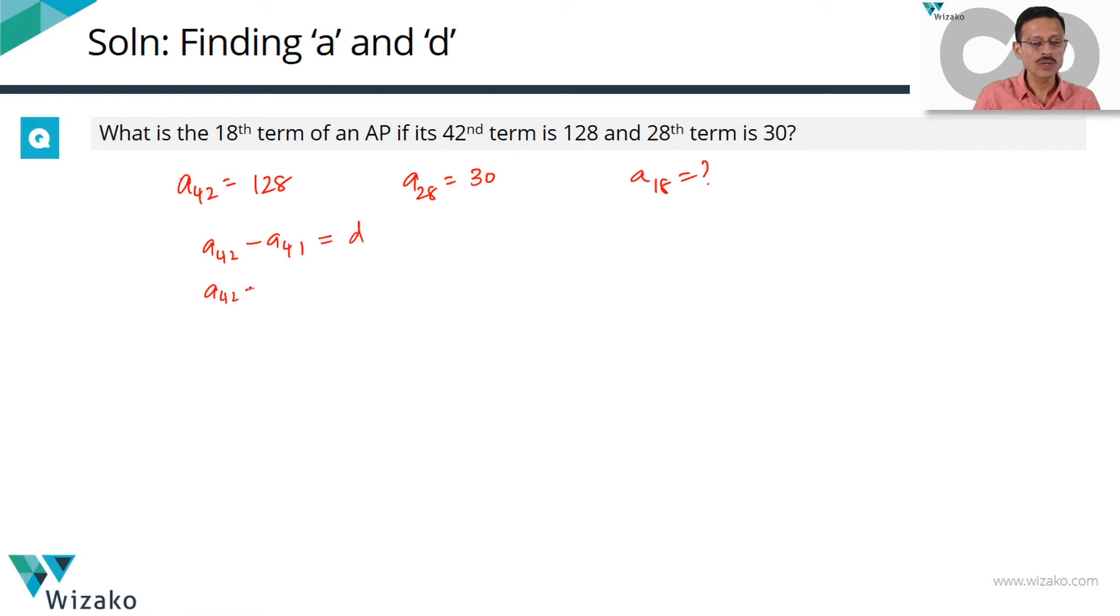Between A42 and A40, how many common differences are likely to be there? A42 to A41 is one common difference. A41 to A40 is another common difference, so we're going to be seeing two common differences between A42 and A40.